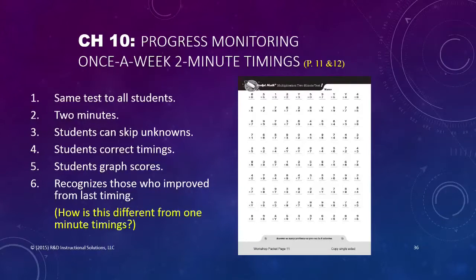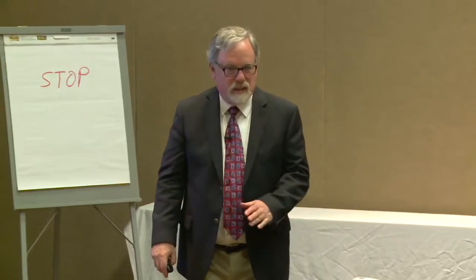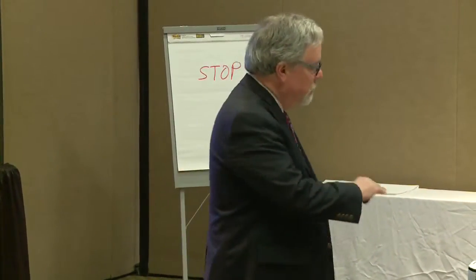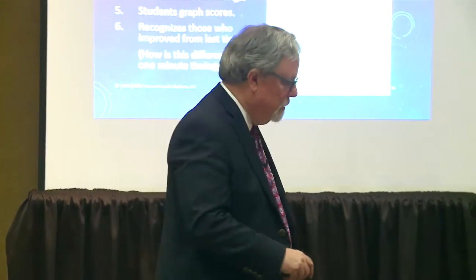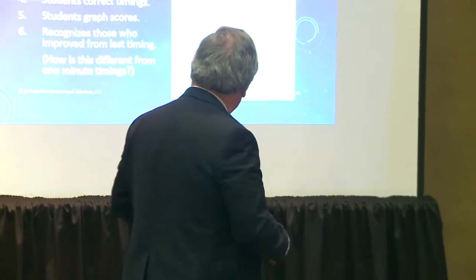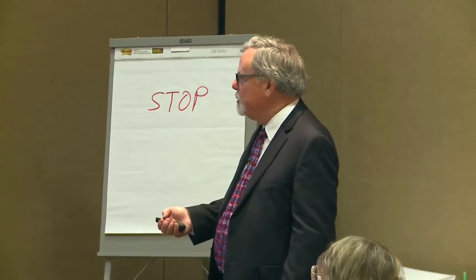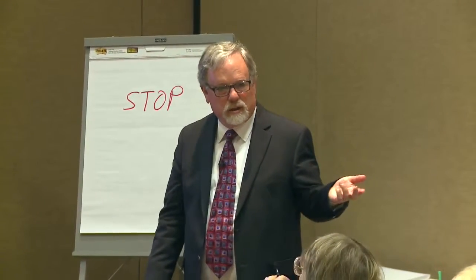Hand those out to everybody. Students are allowed to skip the unknowns, because these have facts in there that they don't know. On the daily test, they can't skip — if they skip anything, it's marked wrong, and you can't get any wrong, so they cannot skip. They need to go across and answer everything because they know all of those. Here, they don't know them all, so they can skip the unknowns, and then you can correct it together with the answer key.